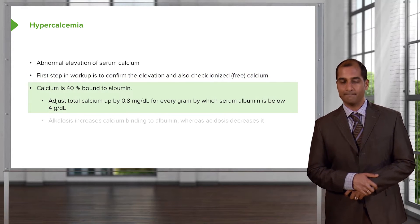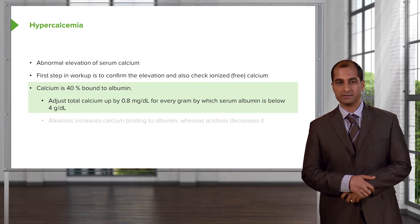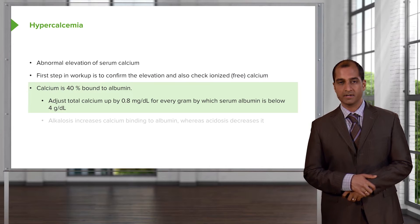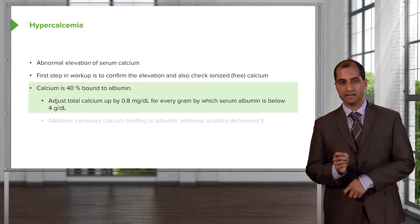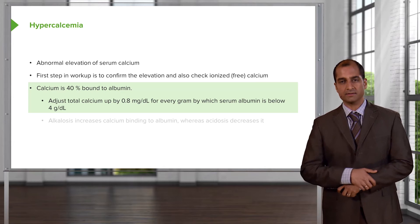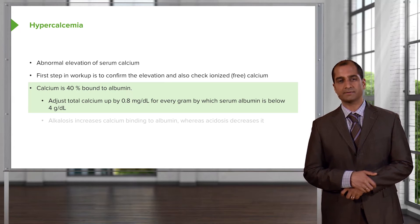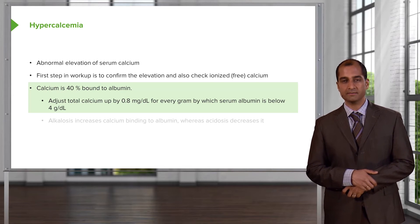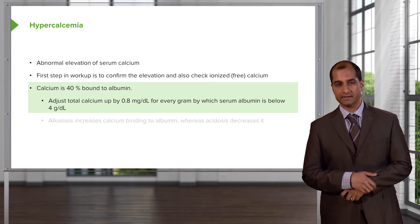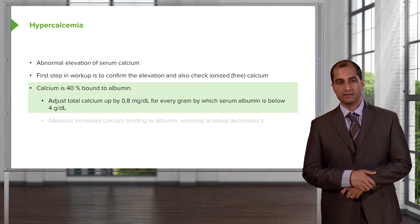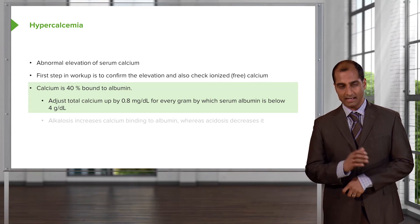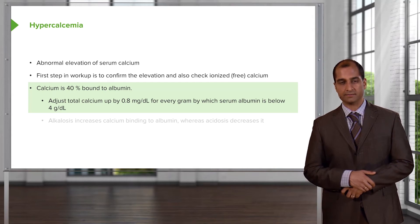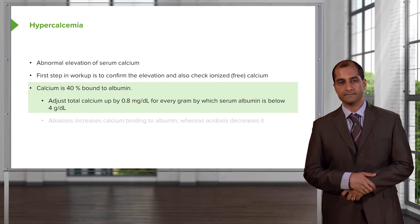Calcium is 40% bound to albumin — it requires a chaperone. Remember, overall calcium in the ECF is a very small percentage; 99% of calcium is actually in your bone. The majority of calcium is in the ECF, so any time there's a channel that's opened up for calcium, it will rush in.